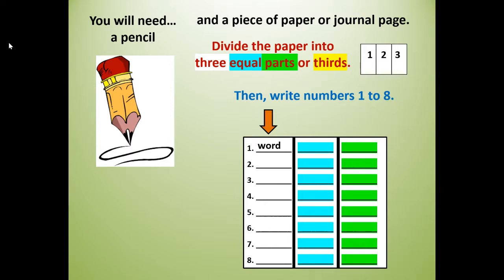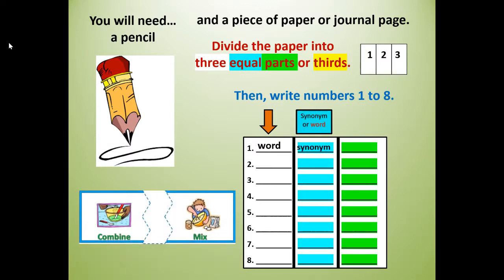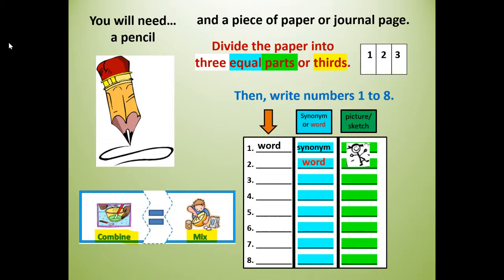If you need to push pause, get a pencil and a piece of paper, write your numbers one through eight. You're also going to write a synonym — a synonym means a word that means the same, just like 'combine' is the same as 'mix.' If you don't catch the synonym you can just write the word again, and then you're going to draw a picture or sketch that goes along with the word for each of our eight vocabulary words.